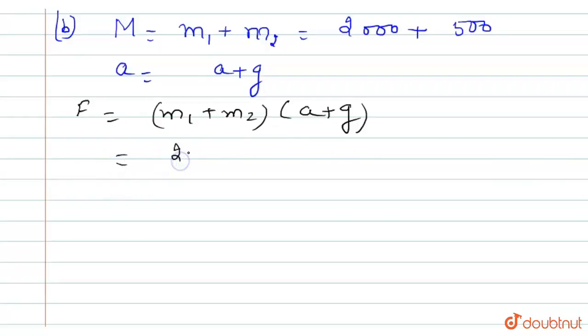It is 2500 into 25, which equals 62,500 newton in downward direction. This force is also in the downward direction.